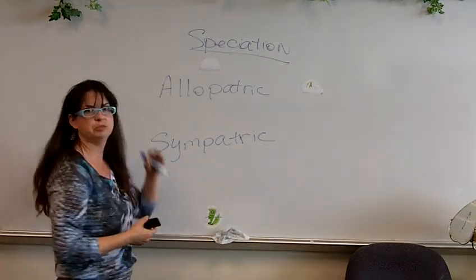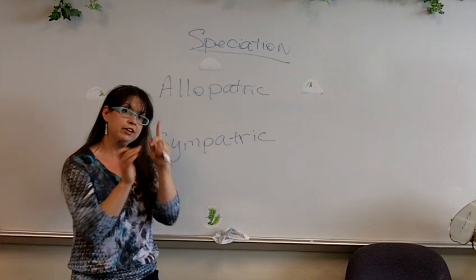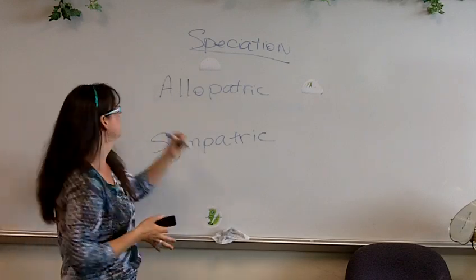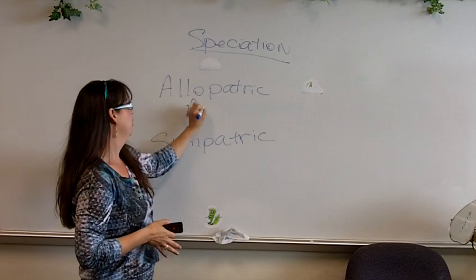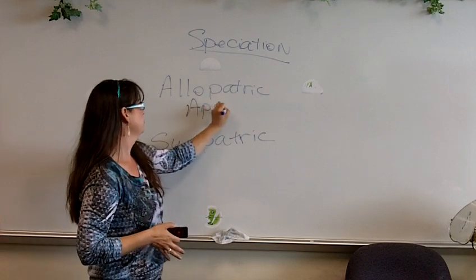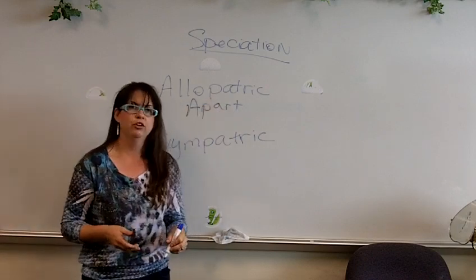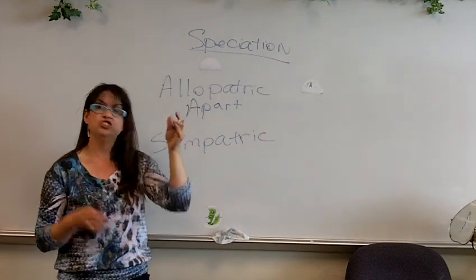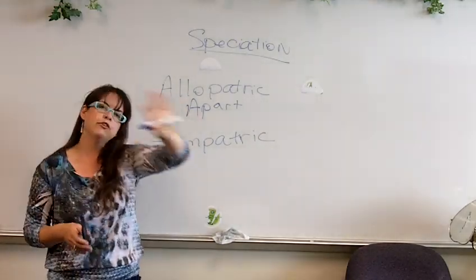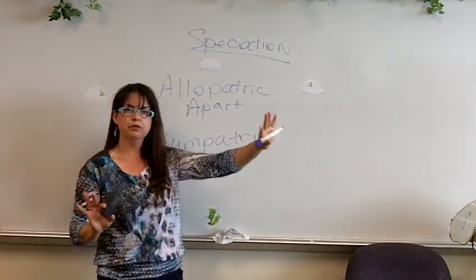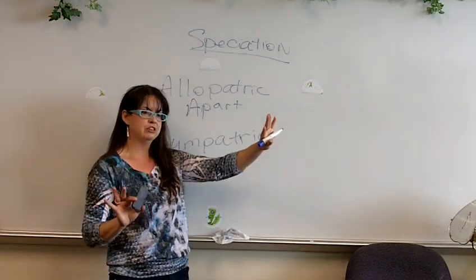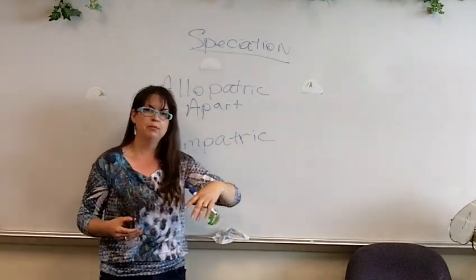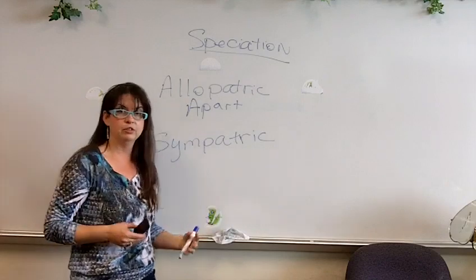In allopatric speciation, somehow this one species gets split apart. I always think of allopatric as 'apart.' Let's say a river — some flooding happens, a giant flood occurs, and then a river is created in between two different frog populations, so the frog species can't get back together anymore. This happens with land animals; it's very common.